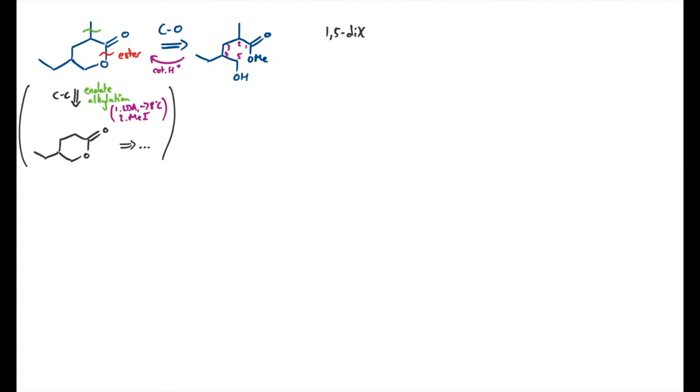So getting back to the task in hand, I've got a 1-5-difunctionalized compound, and the classical way of disconnecting these is to use conjugate addition, also called Michael addition, also called 1-4 addition, whatever your preference.